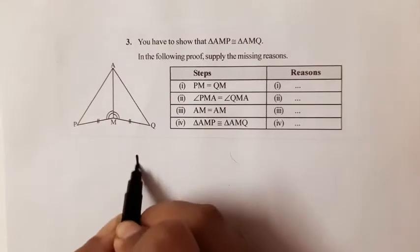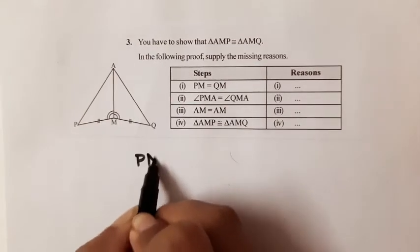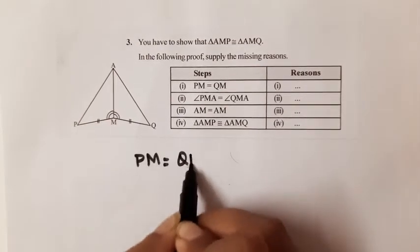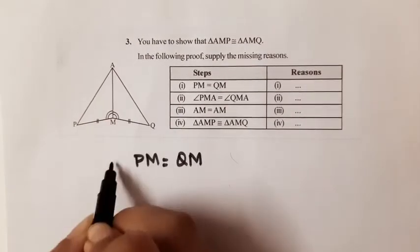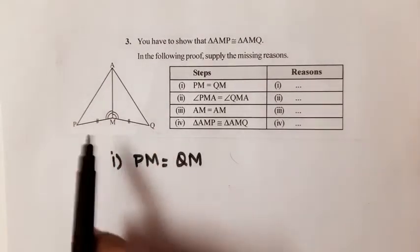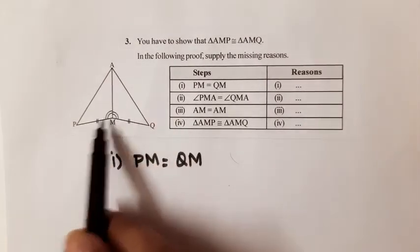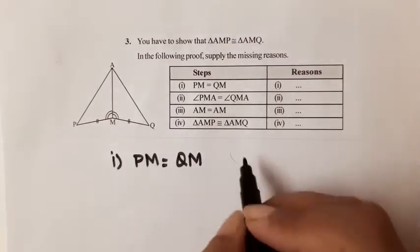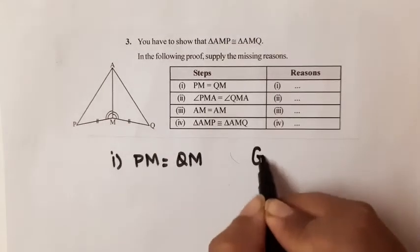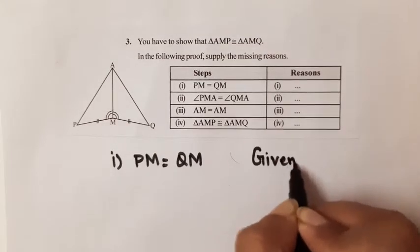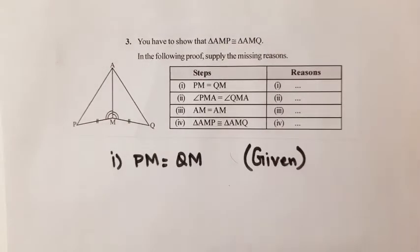If we say PM is equal to QM, how can we say that? The reason is that PM equal to QM is given to us in the question itself. So the reason is: given.